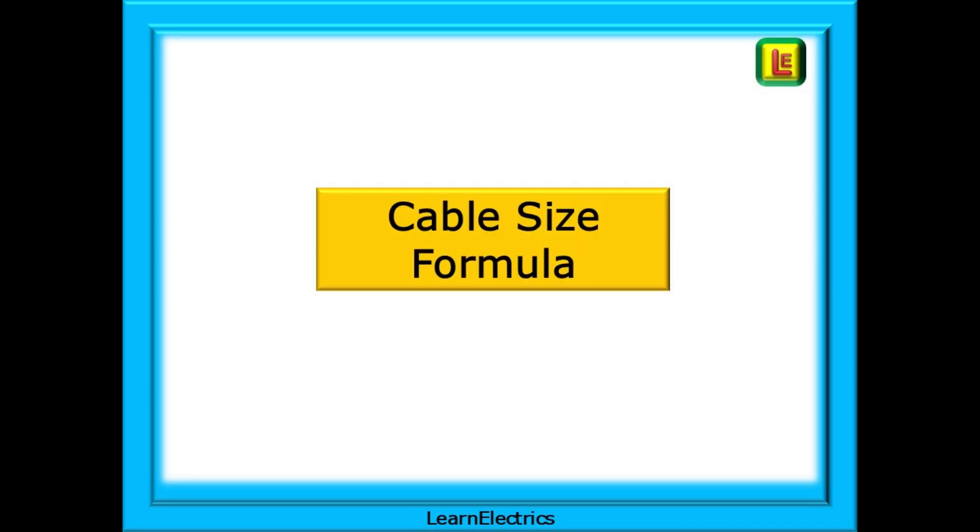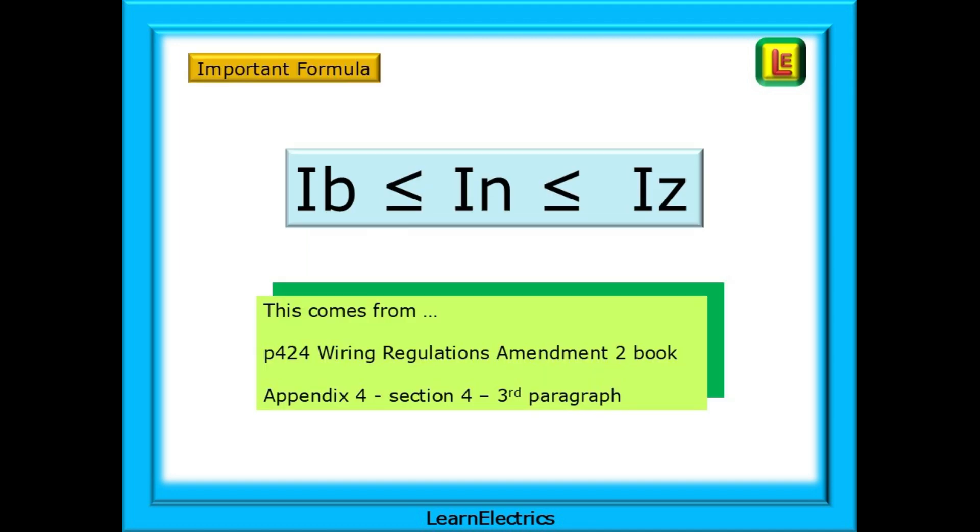Let's start with the cable size formula. There is a set method to help you select the correct size cable for a particular circuit and you are encouraged to use it. This is an important formula or equation and we must follow this in the correct order so that we get the right result. The formula comes from the 18th edition Amendment 2 Wiring Regulations book, the Big Brown book.